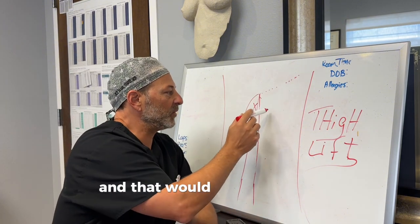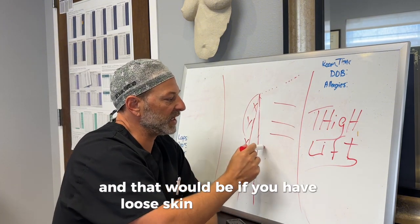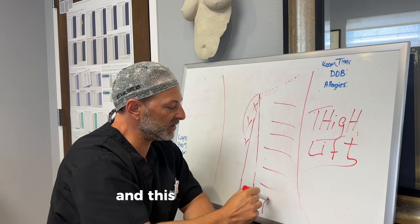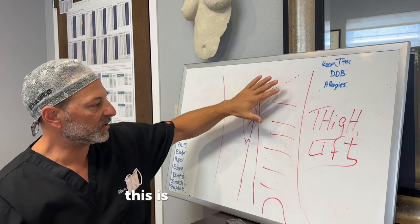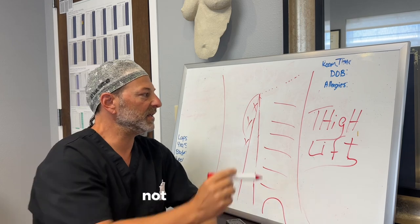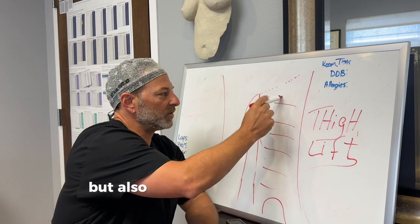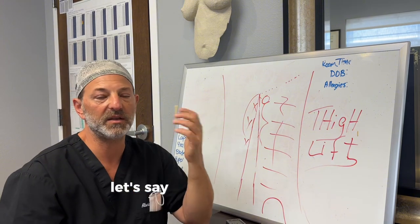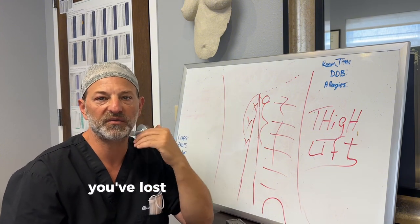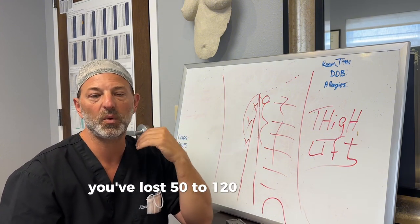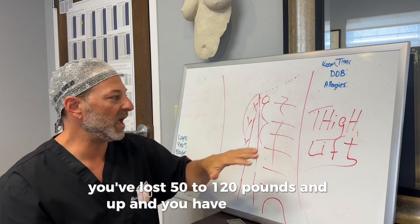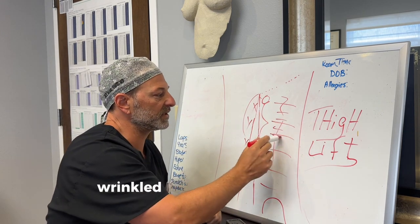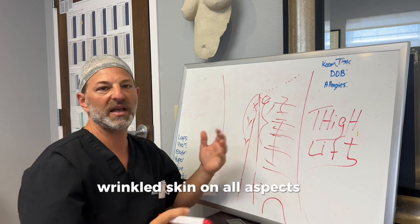And that would be if you have loose skin on your entire - and this is your knee here - this is your entire thigh, not only the inside, but also the anterior part of your thigh all the way down. Let's say you've lost a lot of weight, you've lost 50 to 120 pounds and up, and you have really loose wrinkled skin on all aspects of your thigh.